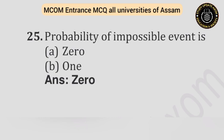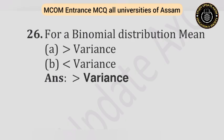Question number twenty-five: Probability of an impossible event is — Option A: Zero. Option B: One. Answer is zero. Question number twenty-six: For a binomial distribution, mean is — Option A: Greater than variance. Option B: Less than variance. Answer is greater than variance.